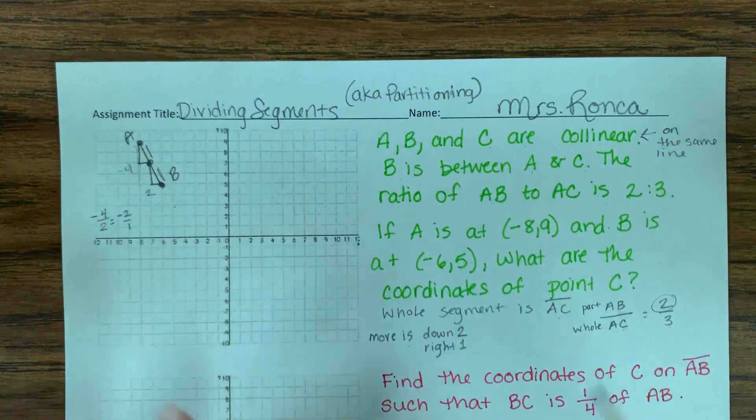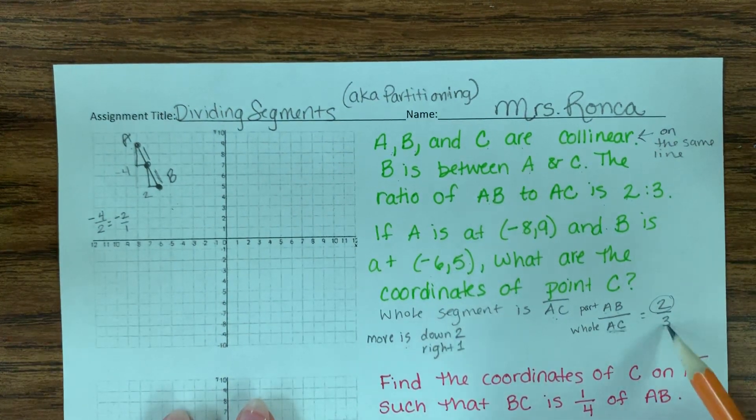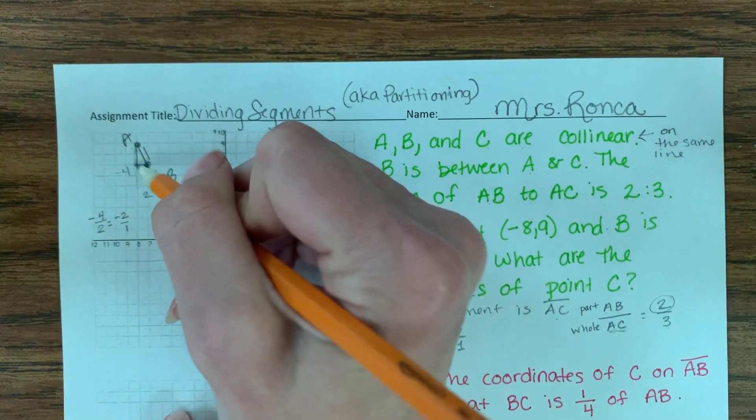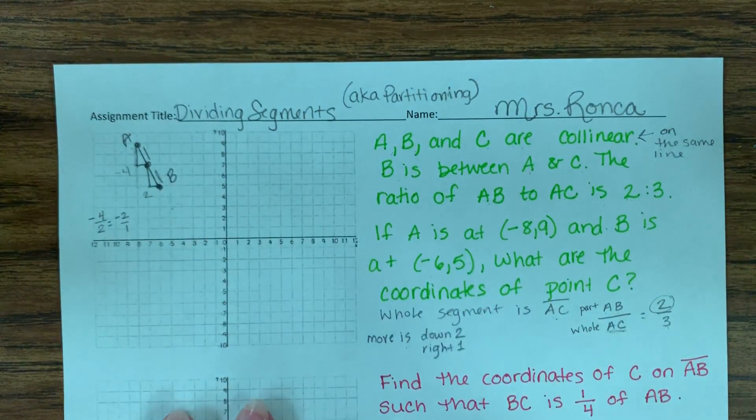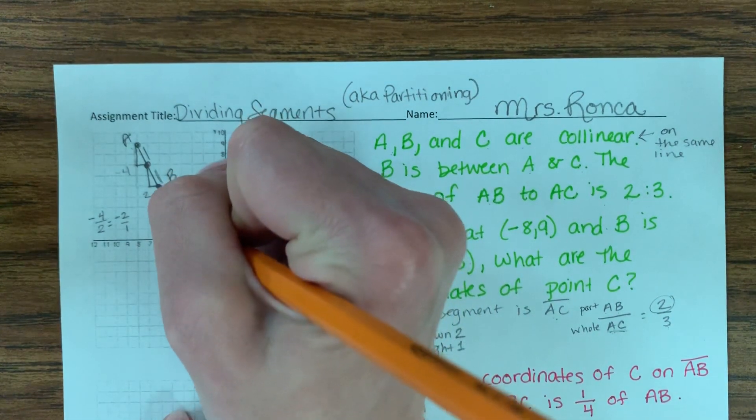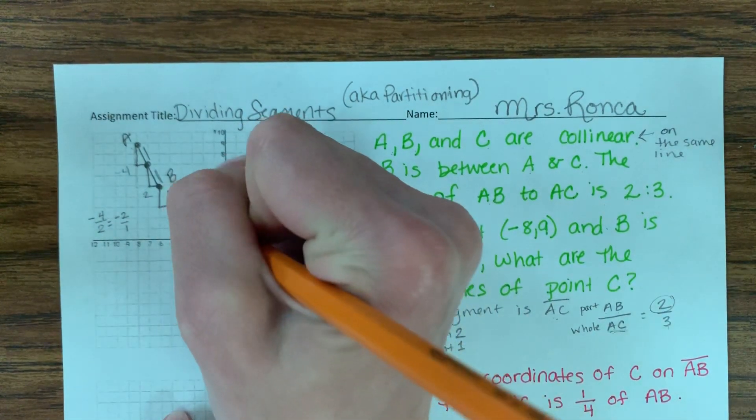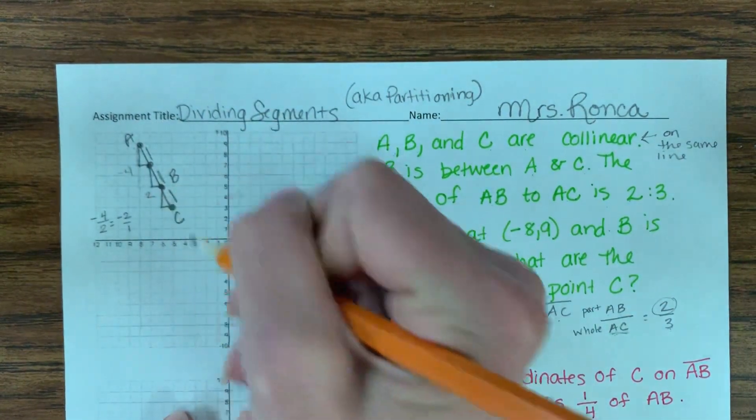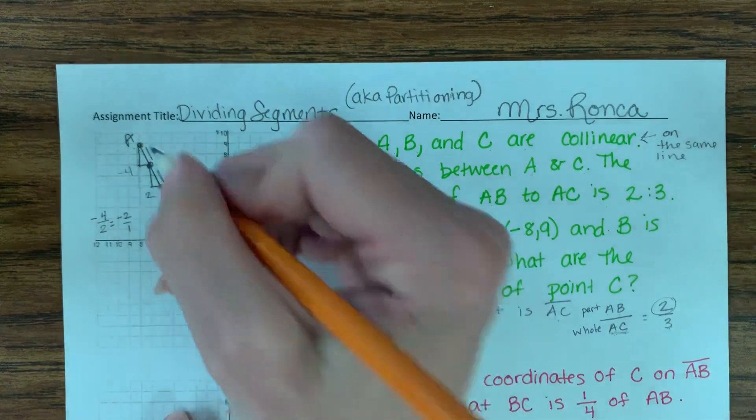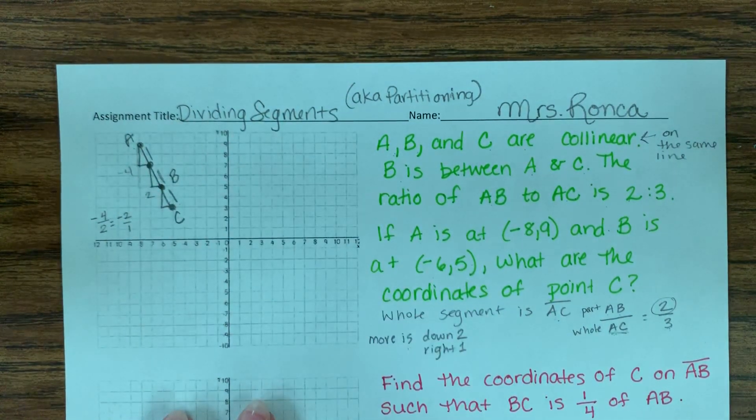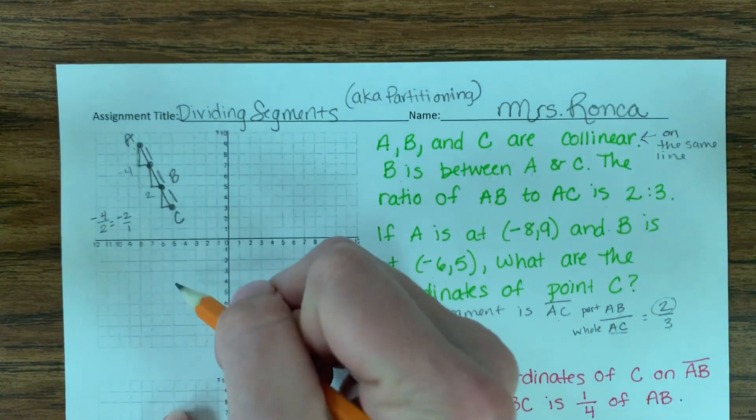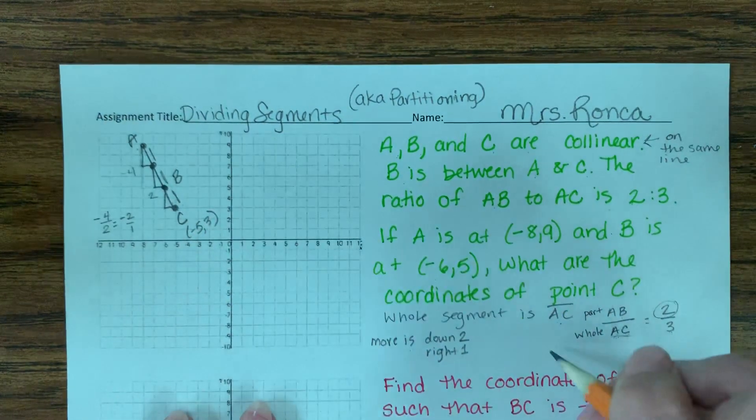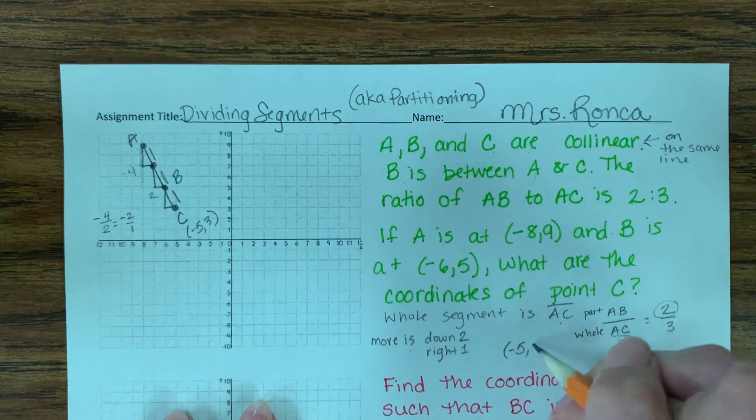But in this example, I'm only going from A to C, and it's supposed to be three sections long. So if I already went down 2 over 1, down 2 over 1, and that's two sections long, I just need to do it one more time to make it three sections long. So this is three sections from A to C, and it's two sections from A to B. So I can write down that coordinate, which is negative 5, 3, for my answer.